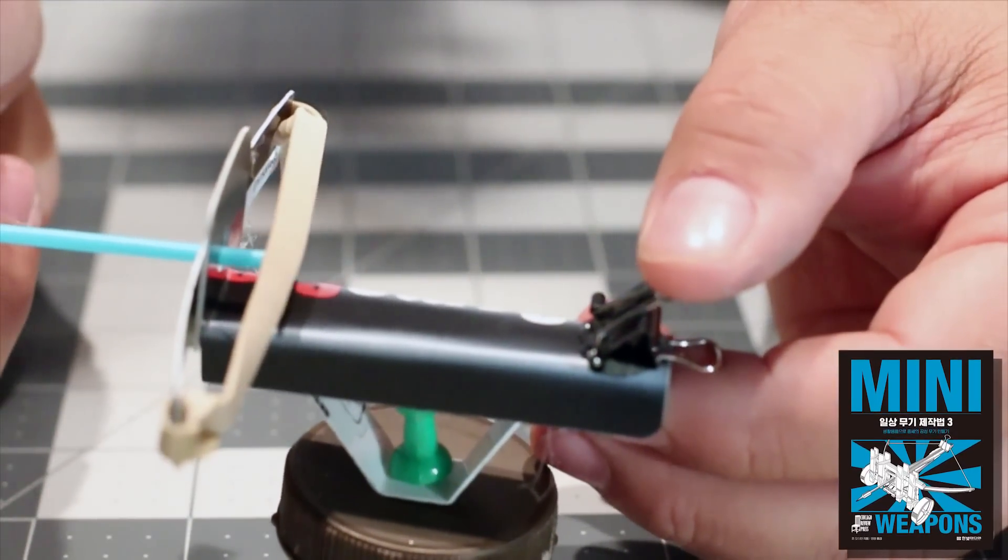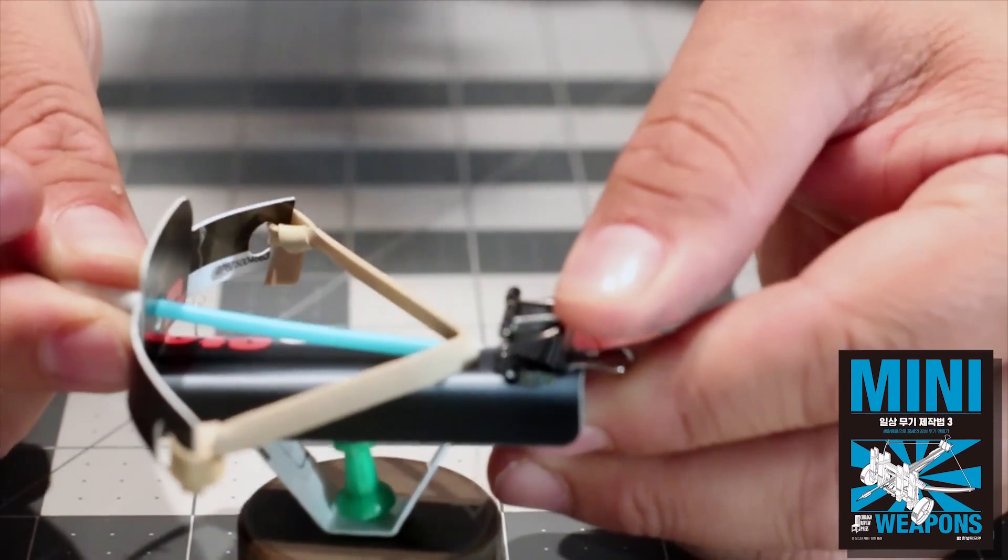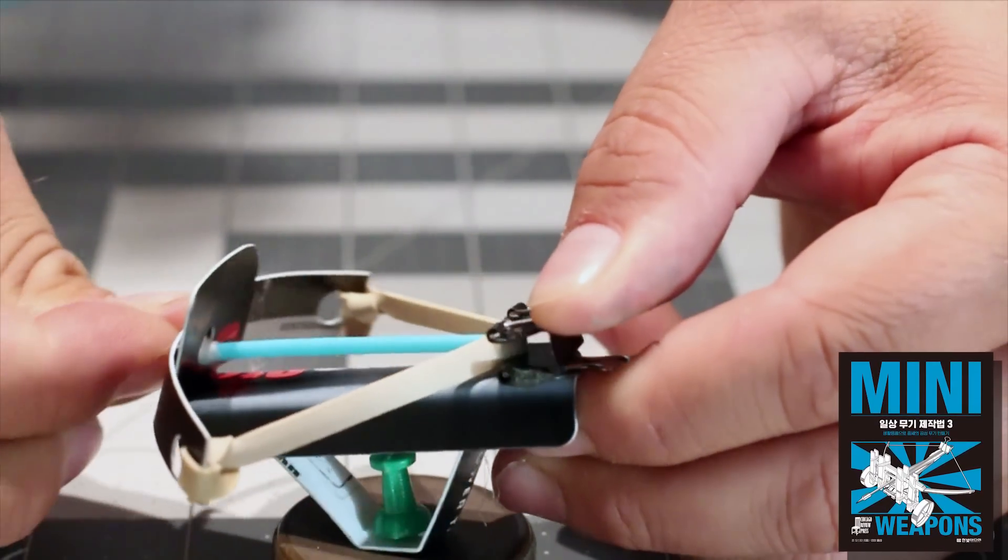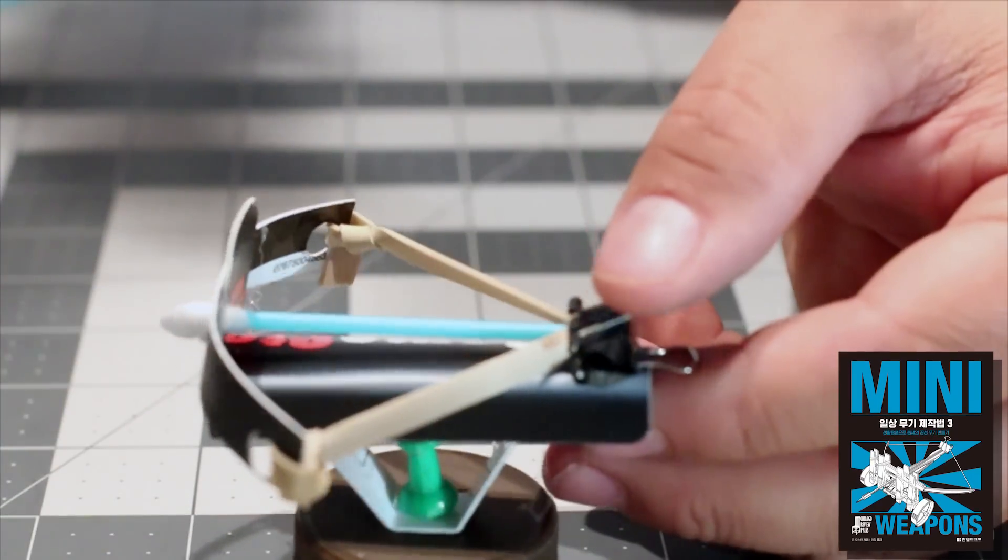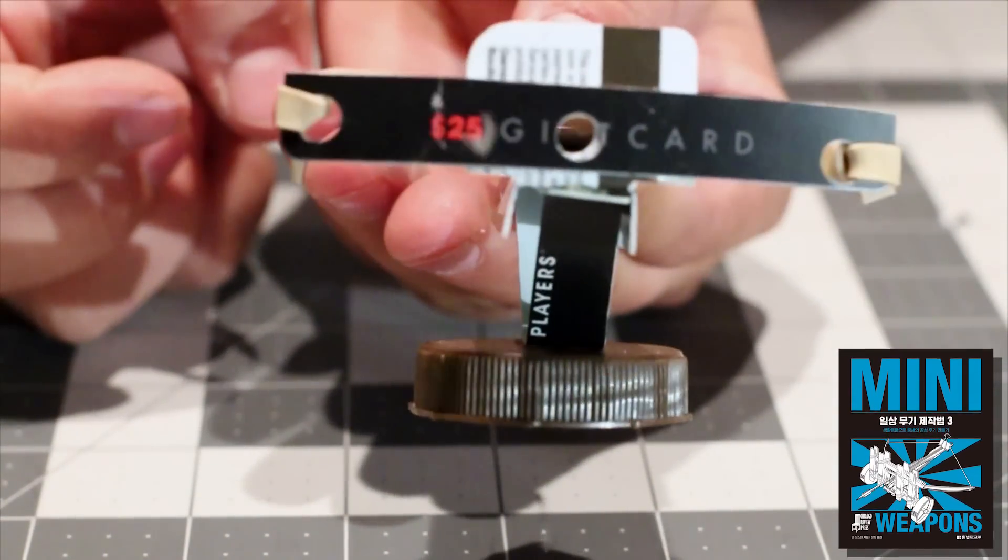Load the modified cotton swab's cut end through the firing hole. Slide the rubber band and the cotton swab into the binder clip. Aim at your target and release.